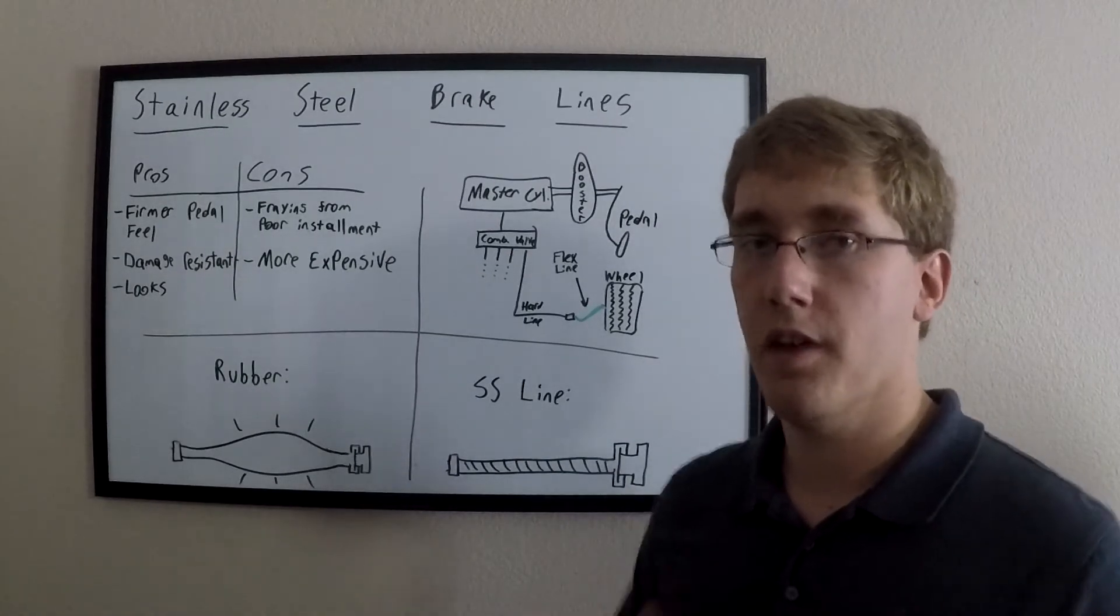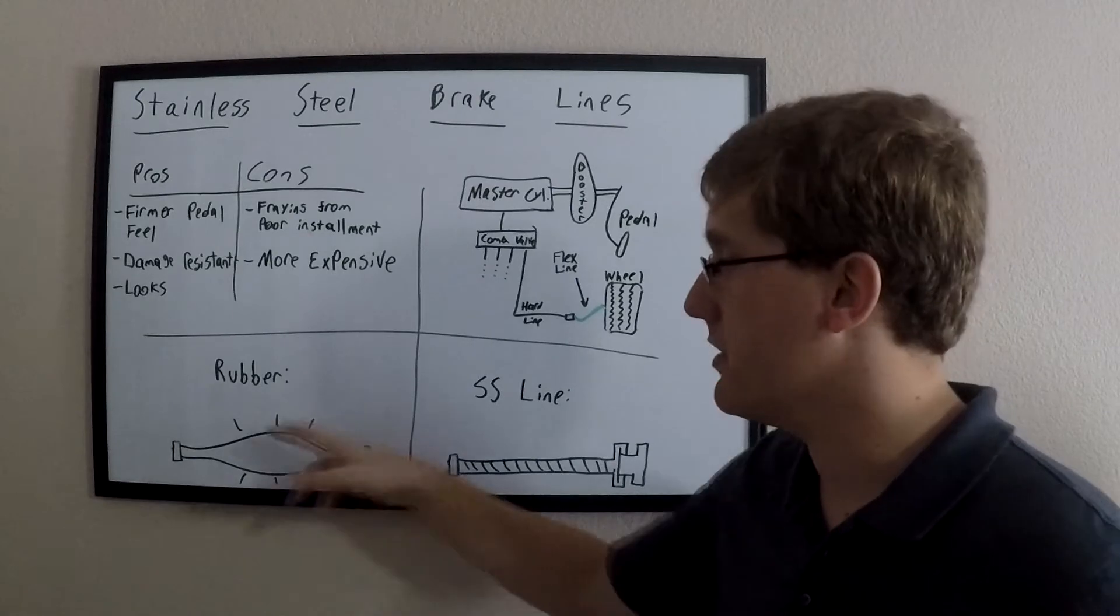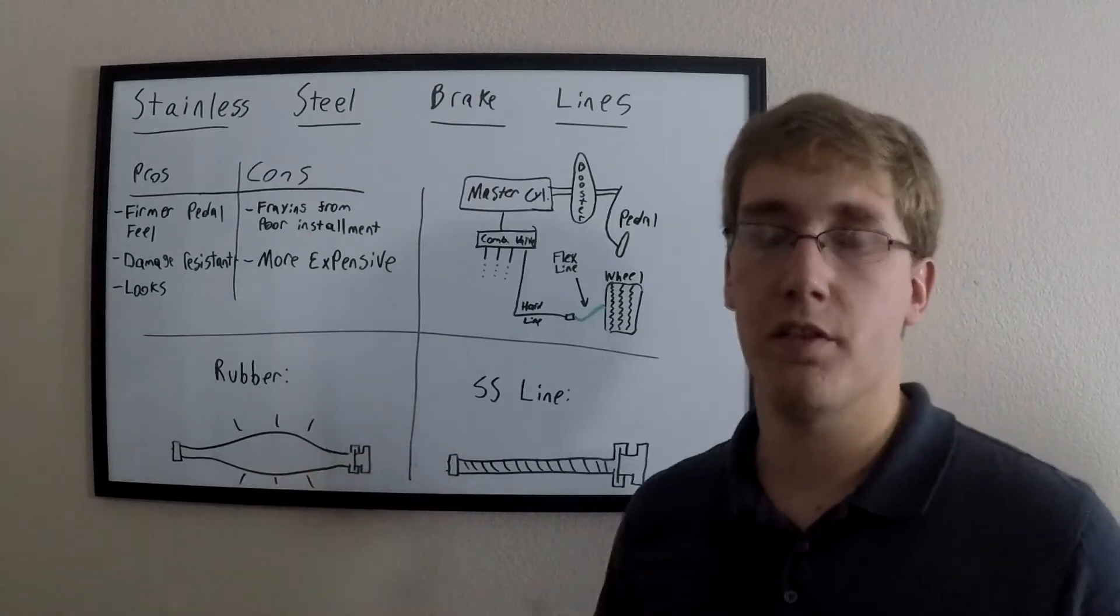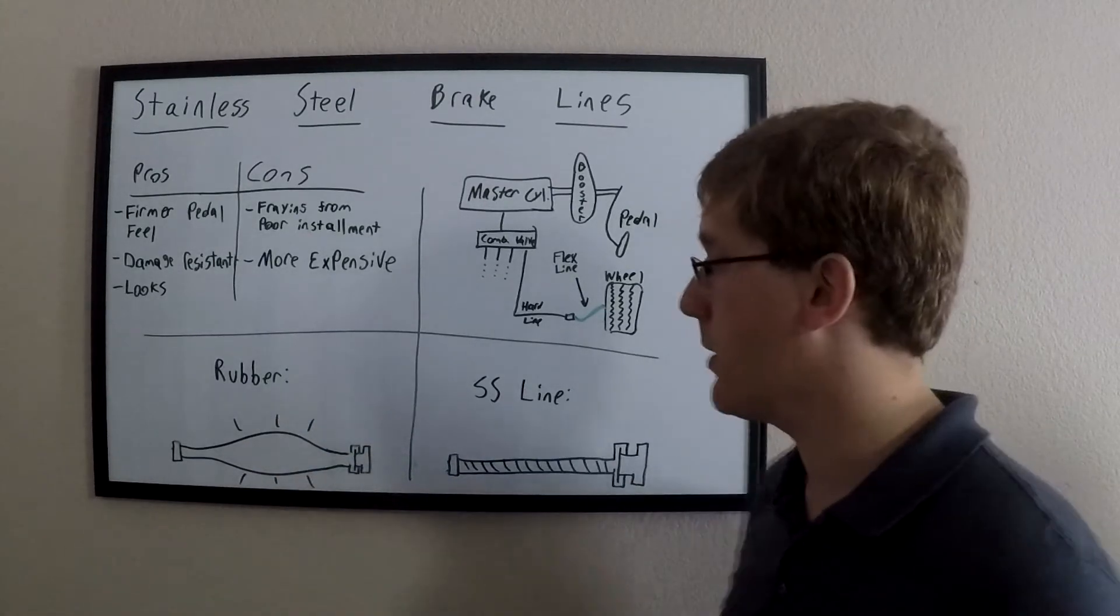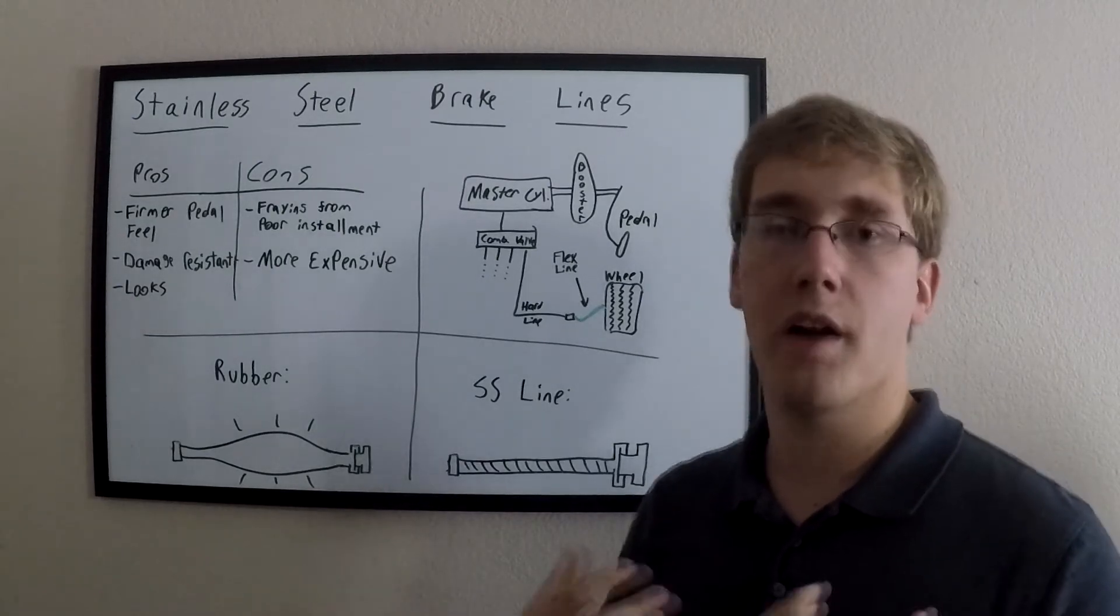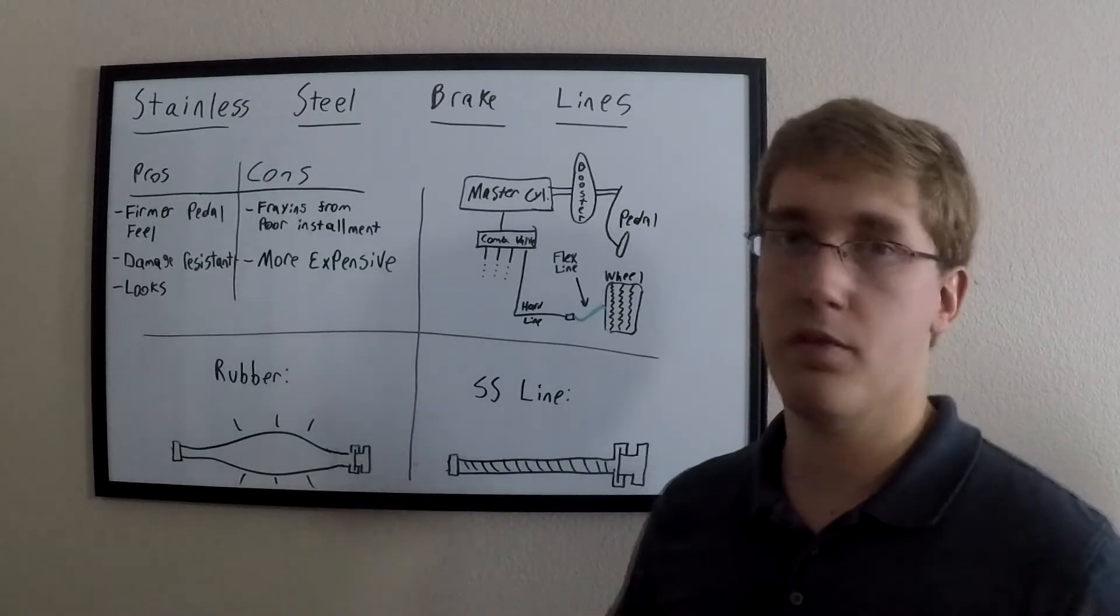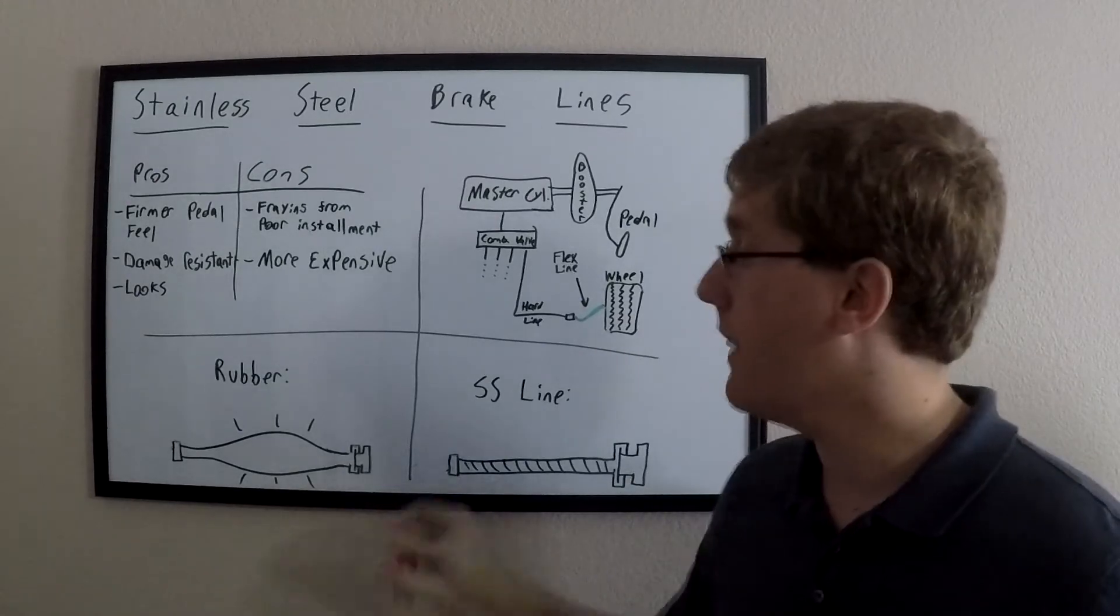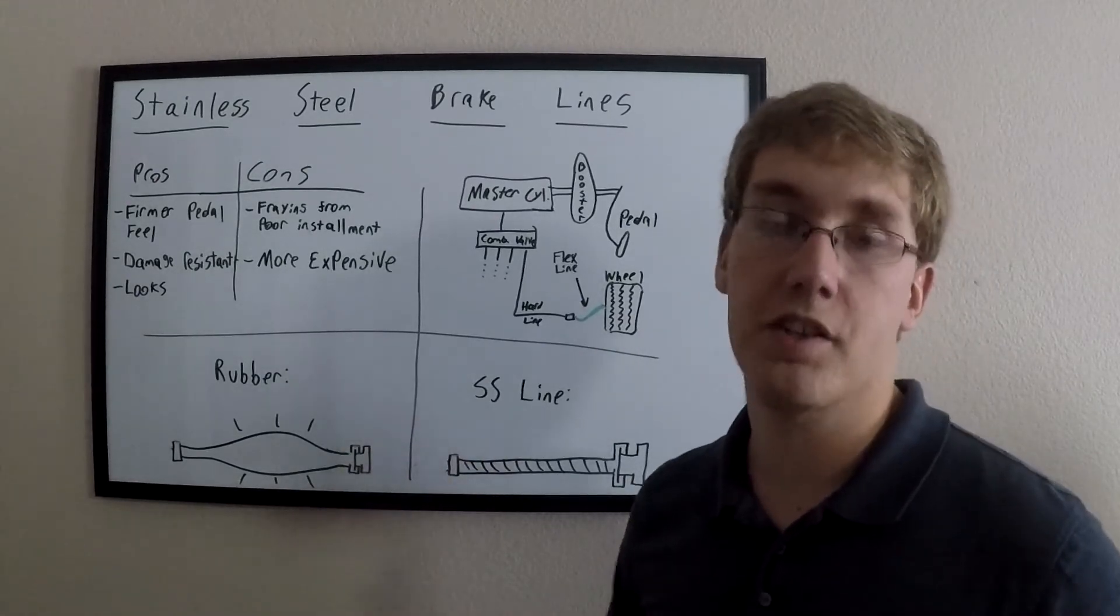Now, OEM rubber lines are not actually as bad as I've made them out to seem here. This is a gross exaggeration of the sort of expansion you might see in rubber hoses. Normally, these hoses are also reinforced with some sort of wire mesh or they may have some other sort of reinforcement inside the line, and that limits the amount of expansion that you actually get from the brake lines.